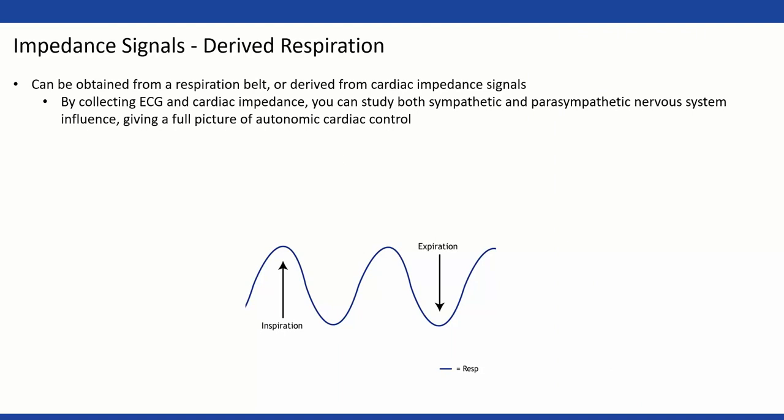The last signal to cover is respiration. For heart rate variability, we actually need respiration just to validate our respiratory sinus arrhythmia (RSA) measure — it doesn't go into the calculation, but we need to see that a normal amount of breath cycles were taken. In impedance, one interesting thing is that we can actually derive respiration from the impedance waveform itself. So if we're collecting impedance, we don't have to use a chest belt, and we don't have to add anything else to the subject — it's a little bit cleaner.